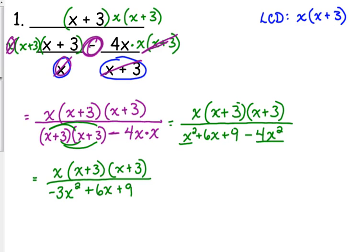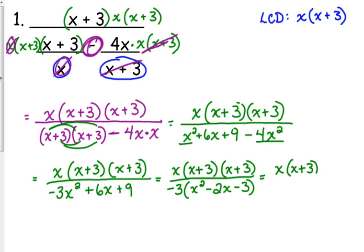I can factor. First of all, there's a GCF. There's a GCF of negative 3. Remember, if the leading coefficient is negative, we need to factor out a negative. So when we take out a negative 3, we are left with x squared minus 2x minus 3. And that trinomial will factor x minus 3 times x plus 1.